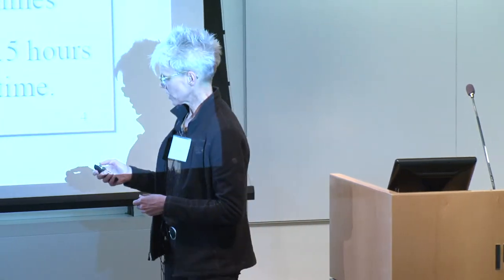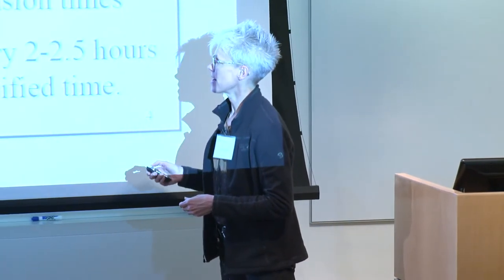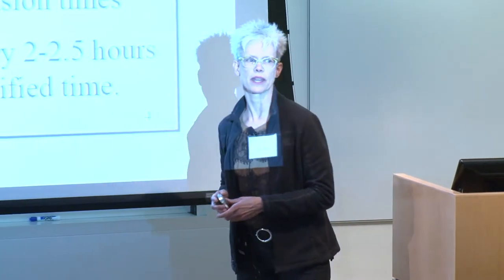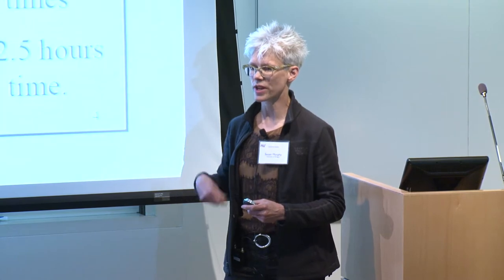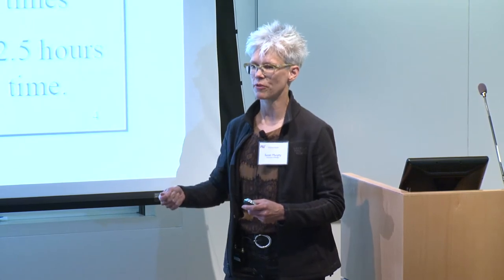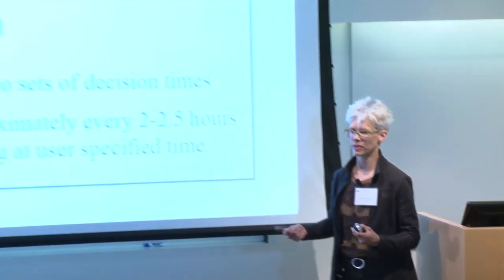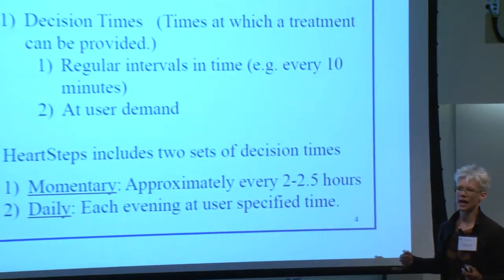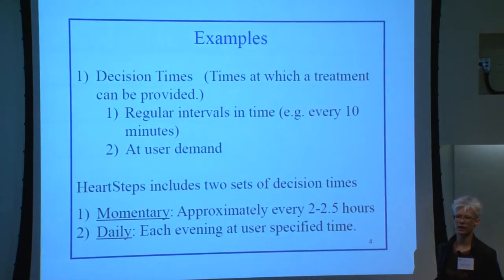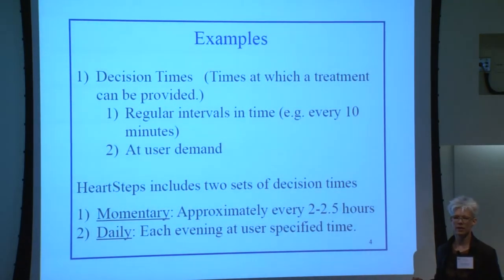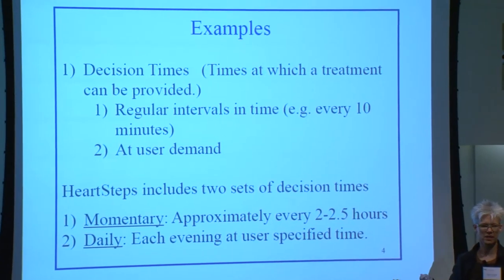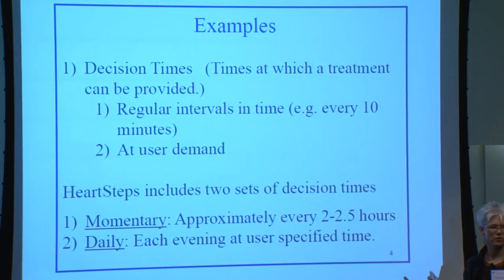Here the decision times are very frequent — like one every minute — because you have to constantly monitor them so they don't get into the store. Another type of decision time is user demand, which is also pretty common. There tends to be a button on the phone the person can press to request help. For example, if I'm struggling with an addiction, I could press help because I'm feeling a lot of craving, and it would send an automated text message to a mentor or staff.